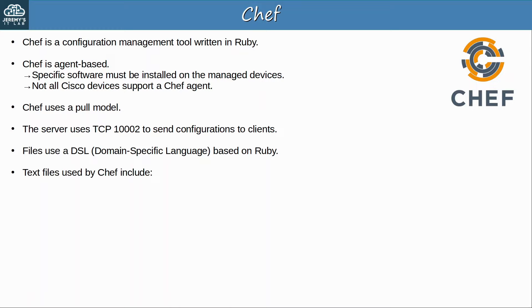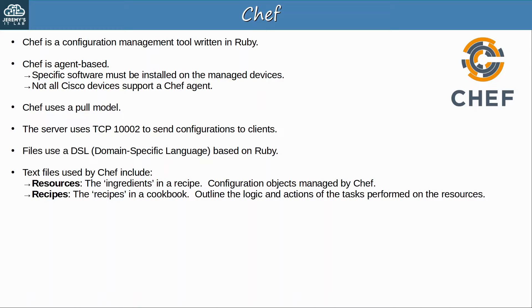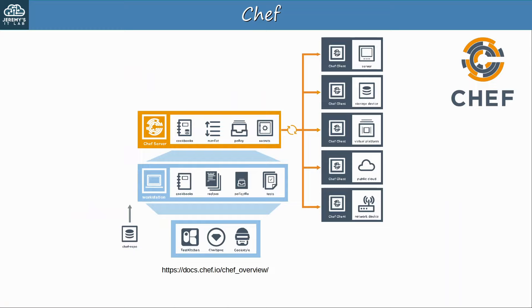Chef's files include resources, which are like the ingredients in a recipe — they define configuration objects managed by Chef, such as a set of configuration commands. Then there are recipes, like the recipes in a cookbook — they outline the logic and actions of the tasks performed on the resources. There are also cookbooks, which are sets of related recipes grouped together. Finally, runlists are an ordered list of recipes that are run to bring a device to the desired configuration state.